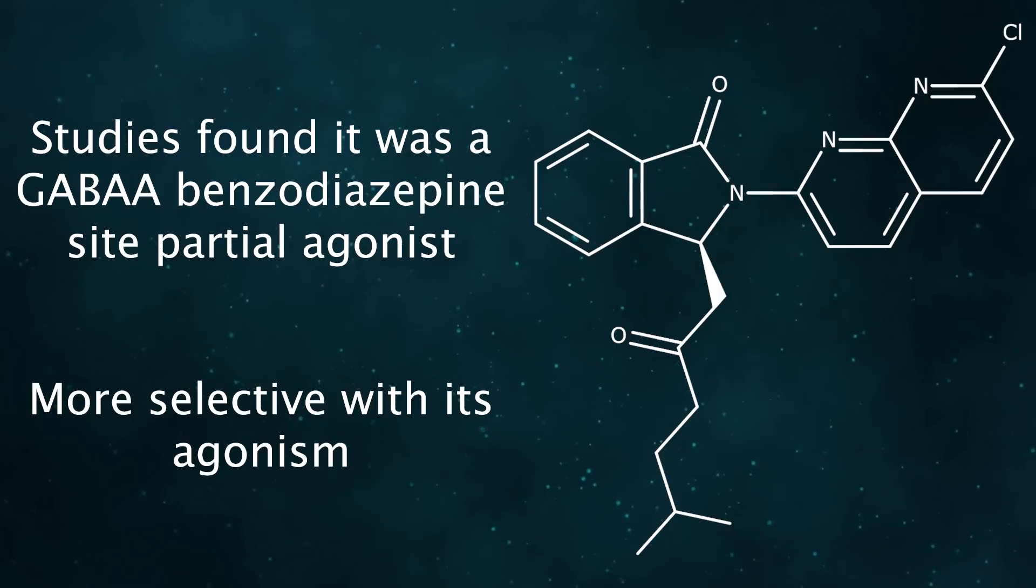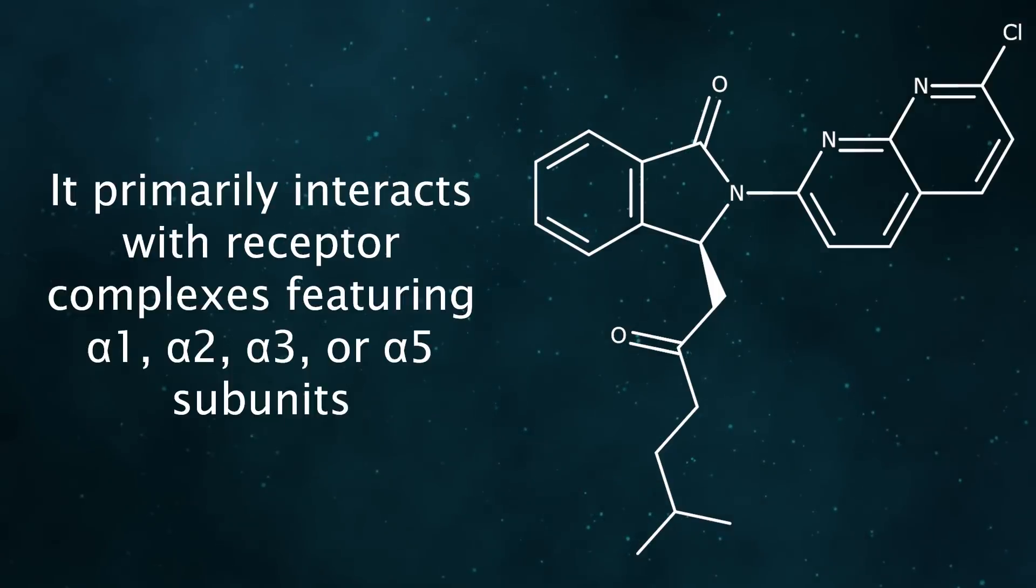Selectivity is also what distinguishes the Z-drugs, like zopiclone, from benzodiazepines. It primarily interacts with GABA-A receptors featuring alpha-1, alpha-2, alpha-3, and alpha-5 subunits.